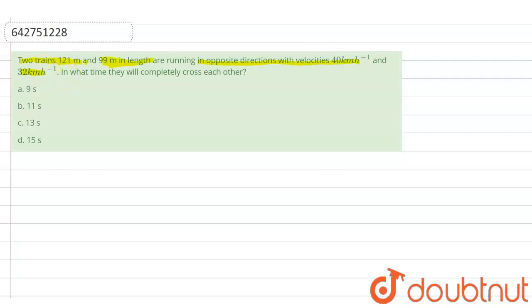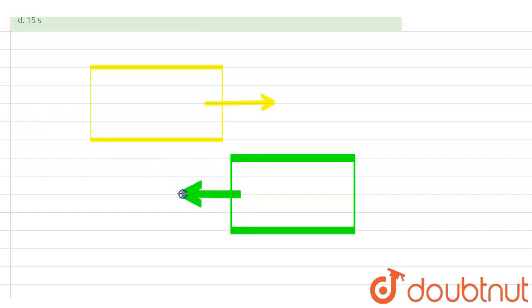This is a question of relative velocity. Let's write down all the parameters that are given here. Suppose this is the first train and this train is moving in the forward direction. Then we have the other train, suppose this is the second train, and it is also moving but in the opposite direction to the first. So these are the two trains.